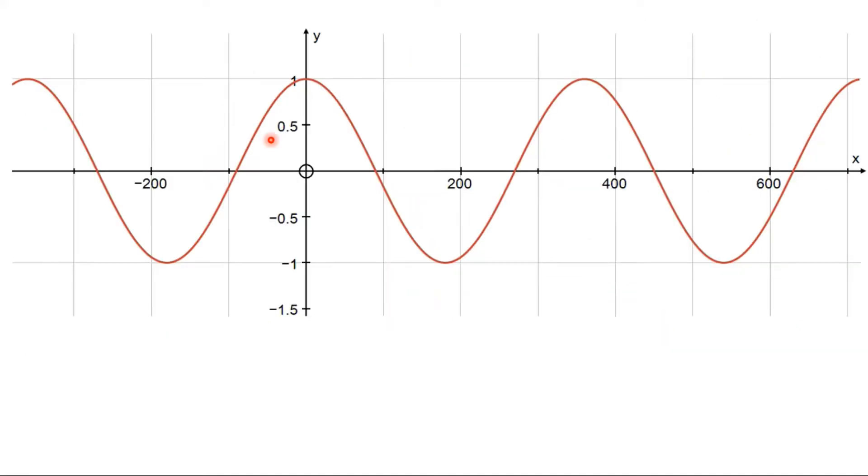So if I have a cosine graph, I can tell this is a cosine graph because it's got a y-intercept of 1 rather than 0.